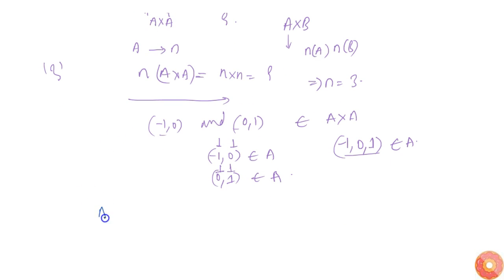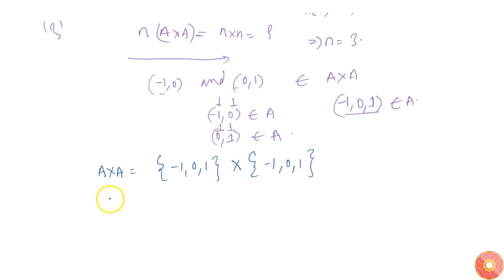So finally A cross A, we can write as set of minus 1 comma 0 comma 1 cross again minus 1 comma 0 comma 1. This we can write as simply set of minus 1 comma minus 1.